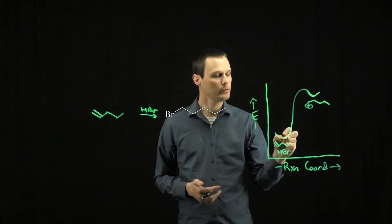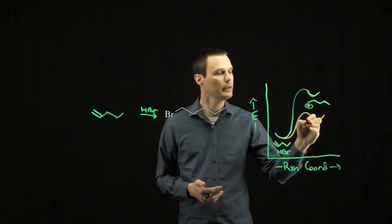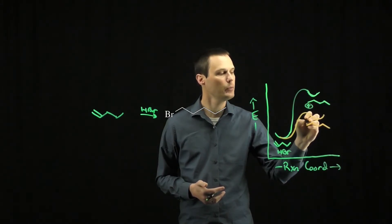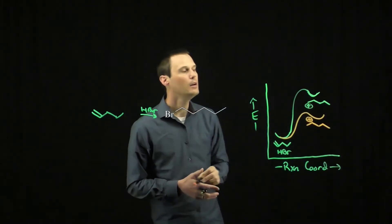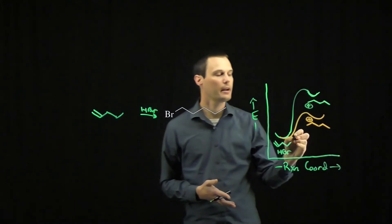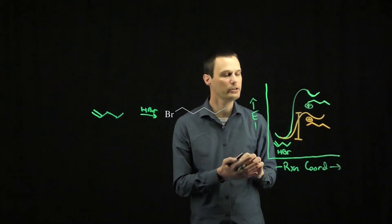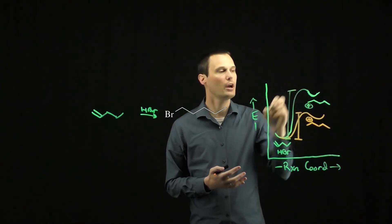And if this same starting material formed a secondary carbocation, well a secondary carbocation is more stable than a primary carbocation. If a secondary carbocation is more stable than a primary carbocation, it has a lower activation energy than the formation of the primary carbocation.